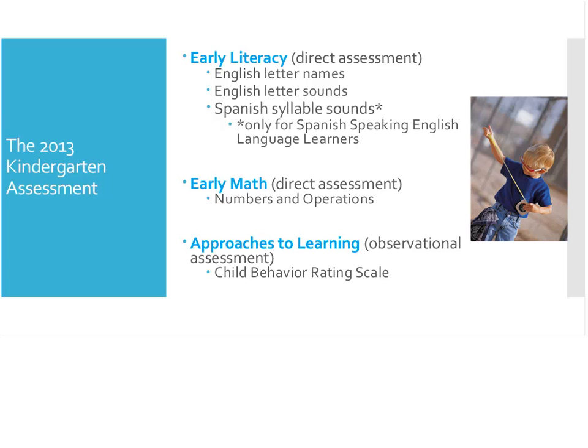The early math measure looks at basic numbers and operations — addition, subtraction, counting, patterns. Children are shown two practice items and then 16 assessment items and asked to point to the correct answer on a chart. It's essentially multiple choice, one out of three. At no point in the early math or early literacy measures are children using a pencil and writing anything on paper — only the assessor would do that.